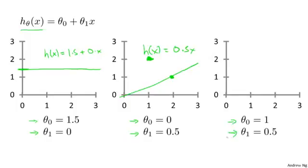And finally, if Theta 0 equals 1 and Theta 1 equals 0.5, then we end up with a hypothesis that looks like this. It should pass through the 2, 2 point, and this is my new h of x, or my new h subscript theta of x.